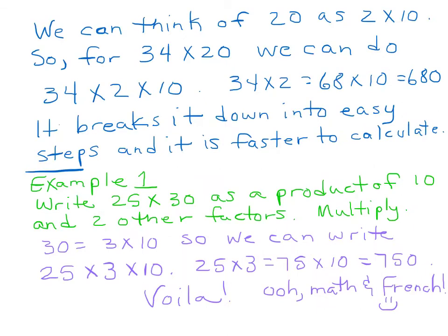Okay, so we can think of 20 as 2 times 10. So, because it is. 2 times 10 is 20. So for 34 times 20, we can do 34 times 2 times 10. Again, it's kind of easy. 34 times 2 is 68, because I'm just doubling the number, times 10 is 680. Fast way to do it. It breaks down into easy steps, faster to calculate.